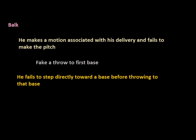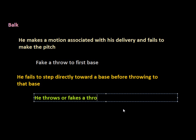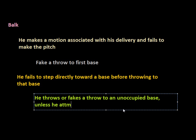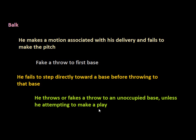The next way is that the pitcher throws or fakes a throw to an unoccupied base, with the exception of when he's attempting to make a play. For example, if there is a runner on first base and that runner breaks for second base attempting to steal, the pitcher is allowed to throw the ball to second base — which would obviously be unoccupied — as long as he doesn't hesitate on first base.